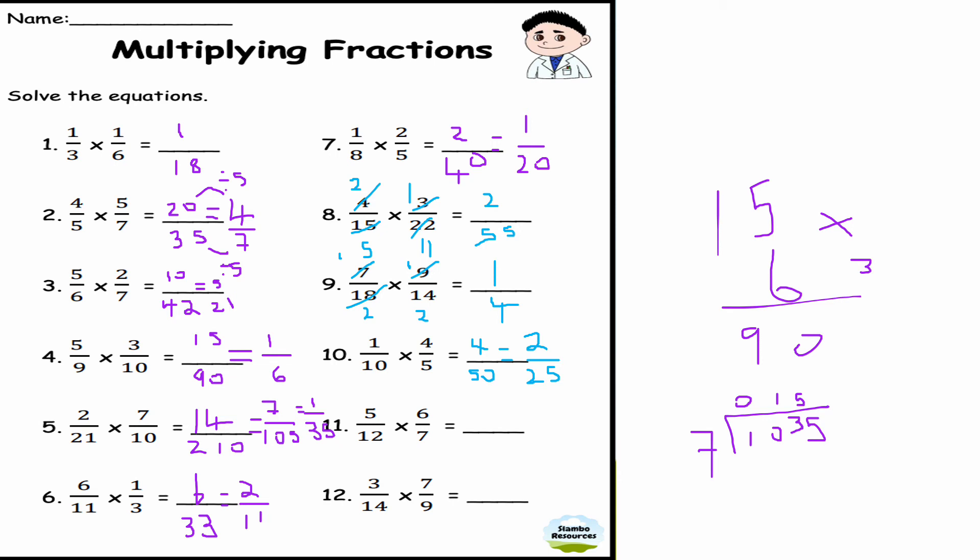This is question number eleven: 5/12 times 6/7. Well, if I divide top and bottom by 6, I get 1 there and then 2 there. 5 times 1 is 5, 2 times 7 is 14, I get 5/14.